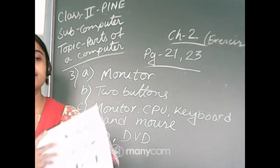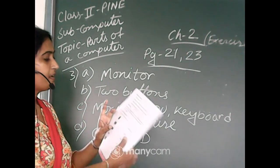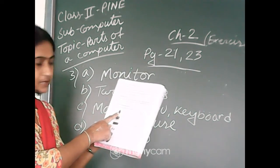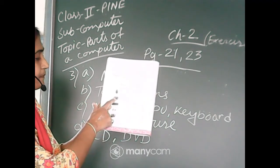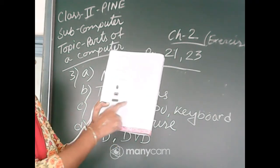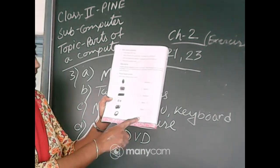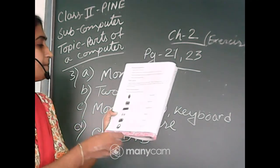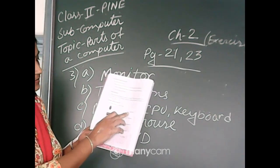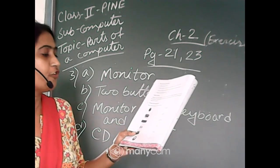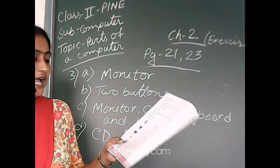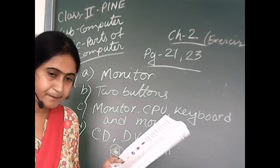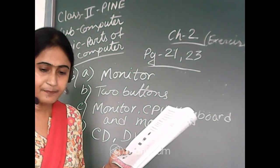Now I will discuss the picture-based matching exercise. Mouse — A, Printer — B, Keyboard — C, CD — D, Speaker — E, Headphone — F. Right side: Keyboard C, Speaker E, Headphone F, Mouse A, Printer B, and CD D. Do you have any problem in matching? No. Okay, fine.